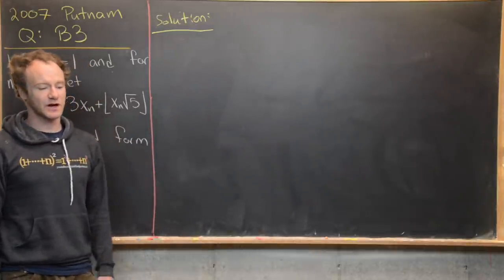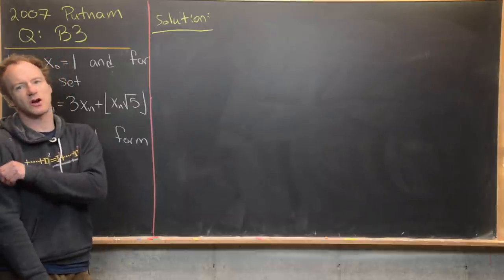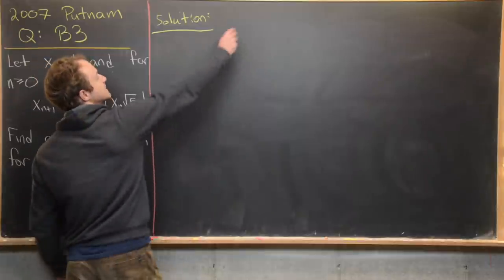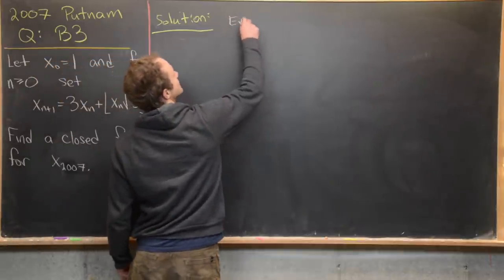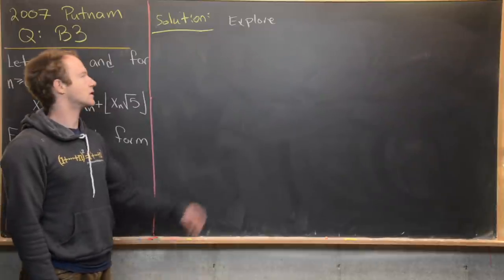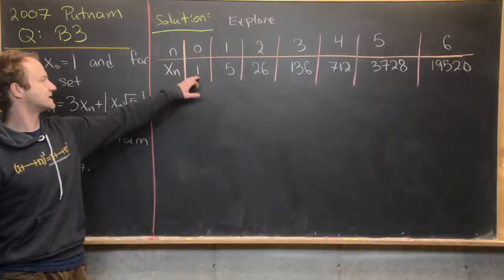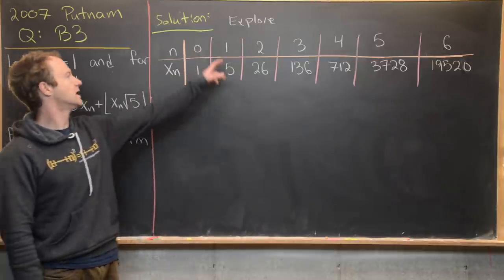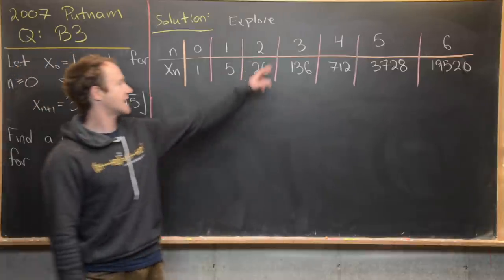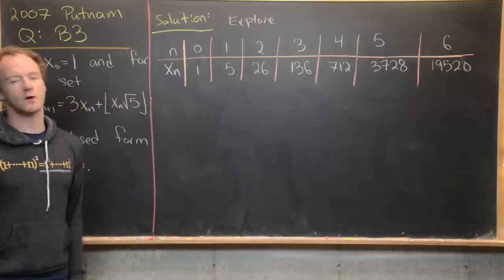The first thing we're going to do is explore by making a chart of the first several terms from this sequence. So: x₀ = 1, x₁ = 5, x₂ = 26, x₃ = 136, x₄ = 712, and so on and so forth.